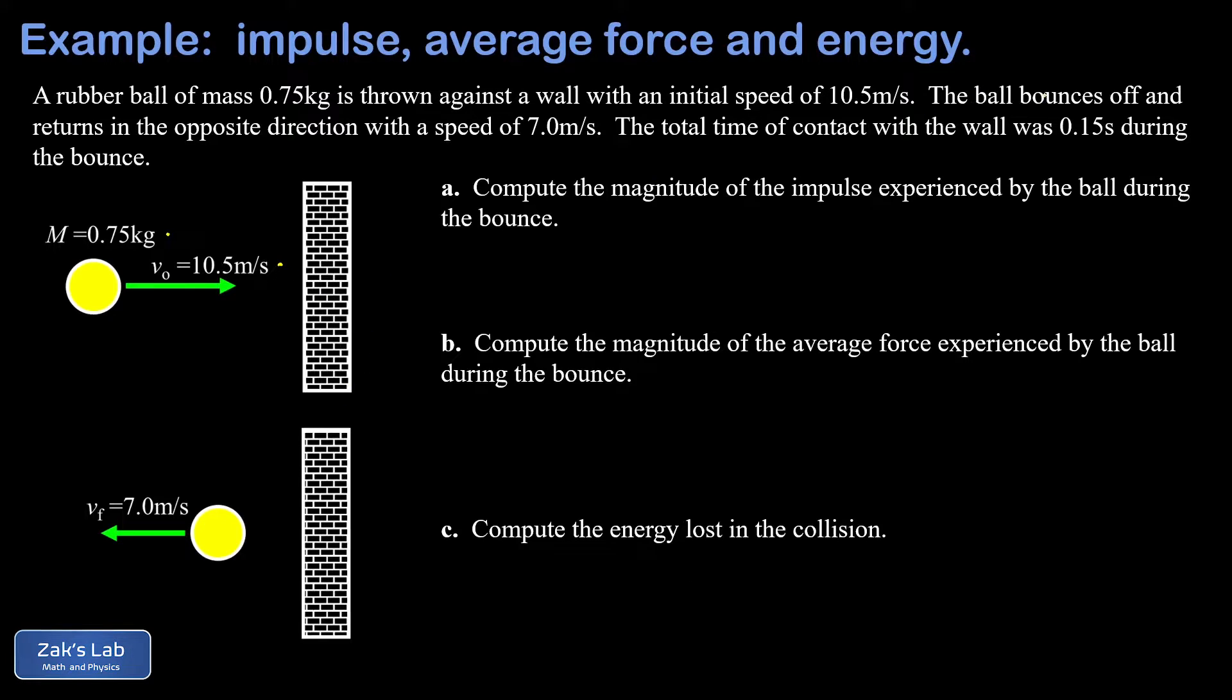It bounces off the wall in a total time of 0.15 seconds and turns around, but after the bounce it's moving slower at 7 meters per second instead of 10.5. In part a we're asked to compute the magnitude of the impulse experienced by the ball during the bounce.